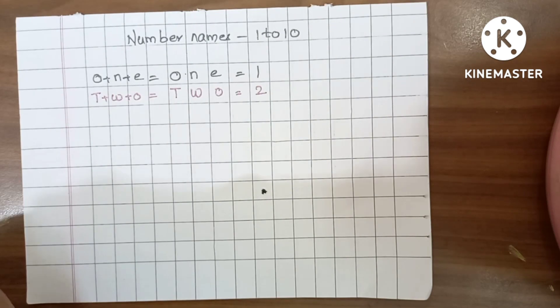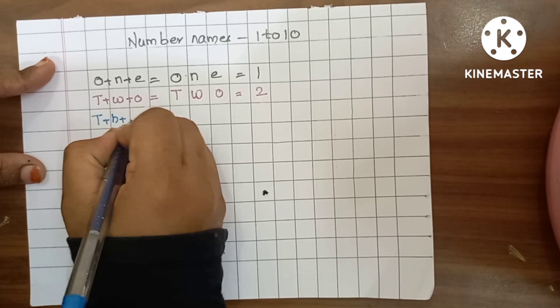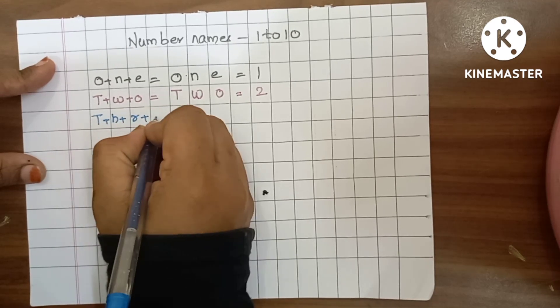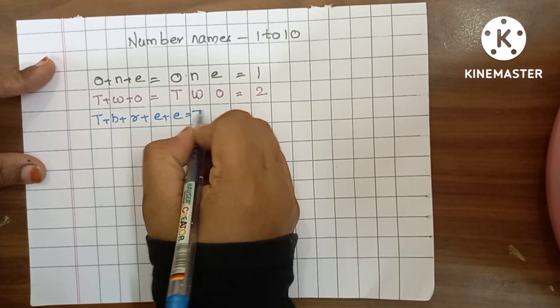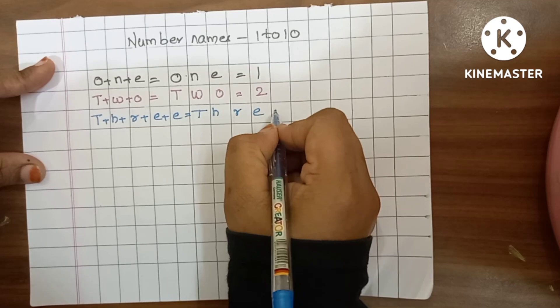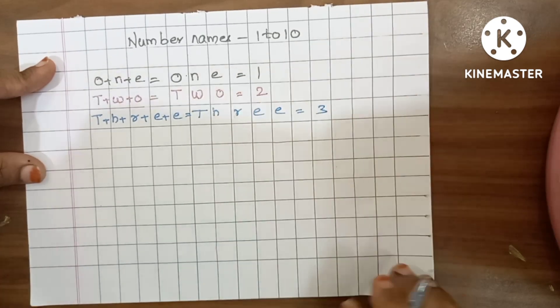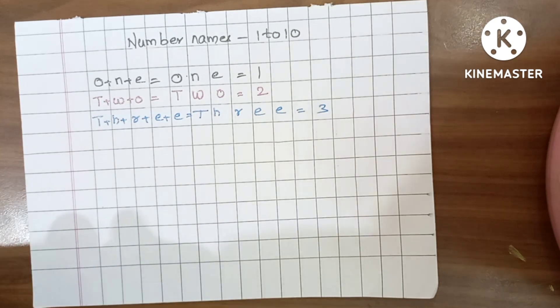Sky color. 3. T plus H plus R plus E plus E is equals to 3. T, H, R, E, E, 3. Bring your color.